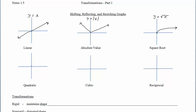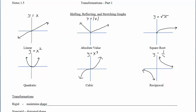Then we have the quadratic, which we've looked at in a previous video — y equals x squared. This is the cubic function: y equals x cubed. And the reciprocal graph has a branch in quadrant one and a branch in quadrant three, with equation y equals one over x. These are the six parent functions we're going to be working with.